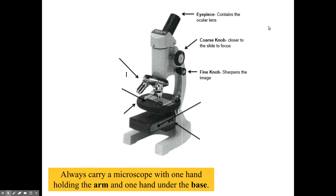The smaller of the two knobs is called the fine knob. It sharpens the image. So you use the coarse knob to focus in on what you're looking for and then the fine knob makes it just a little bit more clear.